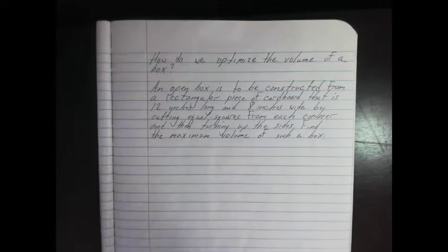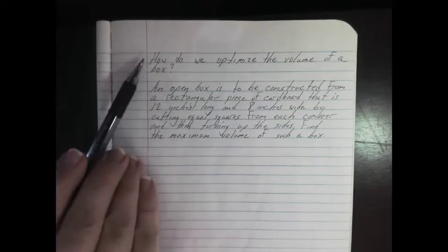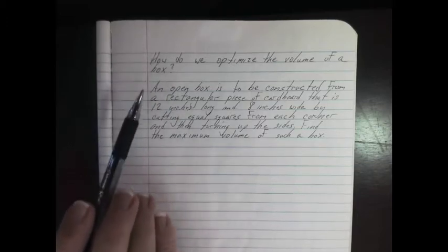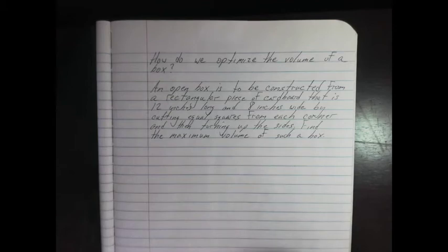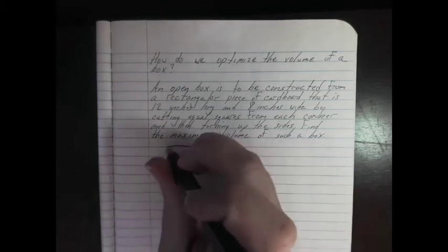So we're going to look at a classic calculus optimization problem with building a box out of a single sheet of material. How do we optimize the volume of a box? Take a second and read this problem through. You might also want to pause the video and write it in. So it's helpful to draw a diagram with this. In fact, it's helpful to draw two.